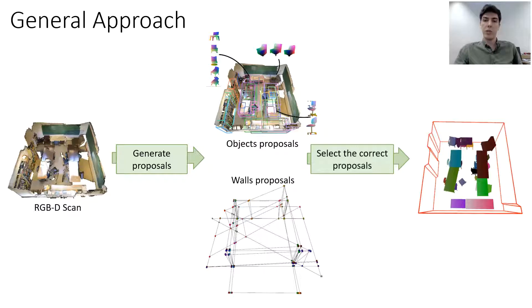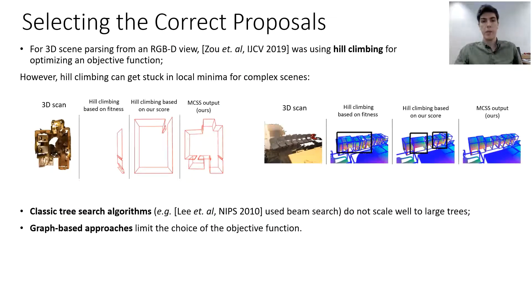The number of proposals easily reaches hundreds or even thousands, so in the second step, we select a subset of proposals which best fits the scene. Due to the large state complexity, it is infeasible to iterate through all possible subsets of proposals to find the correct solution.